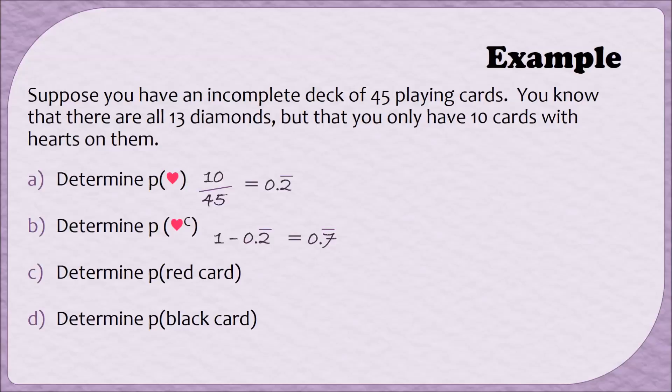For part C, we need to determine the probability of a red card. Since there are 10 hearts and 13 diamonds, we can add these values together and get 23. This means there are 23 red cards in this deck. So, I'll put 23 in the numerator and 45 in the denominator, since there are 45 cards. When I divide this out, I end up with 0.51, with the 1 repeating.